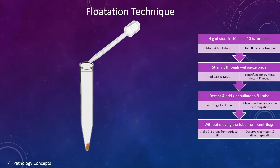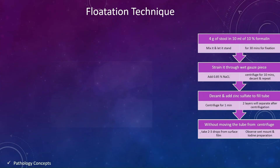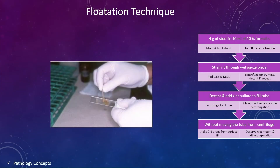After centrifugation, two layers will separate. Without moving the tube from the centrifuge, take 2 to 3 drops from the surface film and put it on the slide. Observe wet mount and iodine preparation under the microscope.